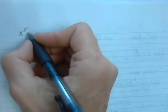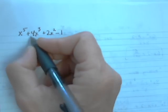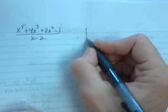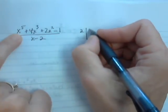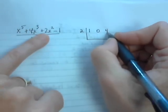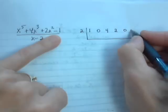Let's try this example: x⁵ plus 4x³ plus 2x² minus 1, divided by x minus 2. Use synthetic division because it's in the form x minus k. Set up your L, put the opposite of negative 2 on the outside, which is positive 2. Then put the coefficients: 1 for x⁵, 0 for x⁴, 4 for x³, 2 for x², 0 for x, and negative 1 for the constant.